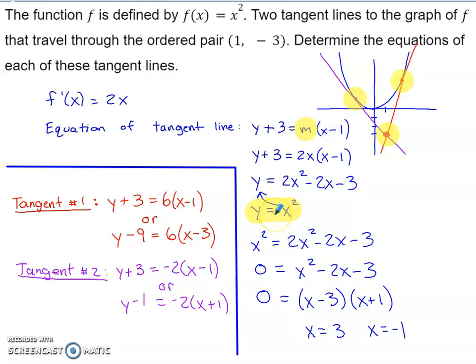But this has to be true in order for our line to actually be a tangent line. If the equation of the parabola is not true, I'm not going to intersect the parabola with my line. Simultaneously, if we want the ordered pair 1, negative 3 on our tangent line, this equation has to be true.